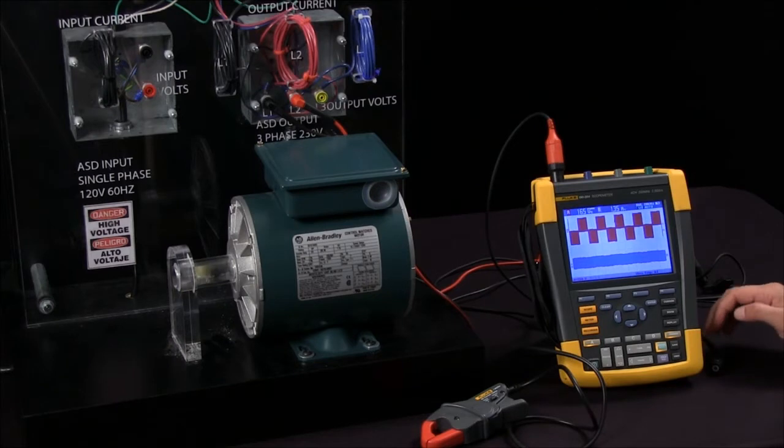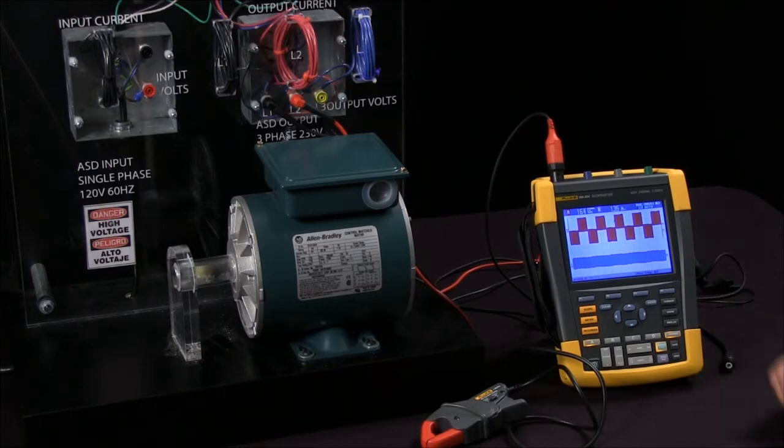As you can see on the screen currently I do have the output side of the voltage hooked up to the drive, so I am looking at a pulse width modulated signal. Now to utilize the scope to actually take a current measurement I am actually going to need to use an S style Fluke series clamp meter.